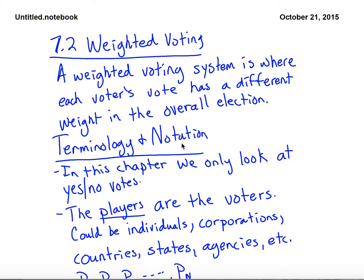Most voting systems use one vote per person, but that doesn't always happen in every voting system. A weighted voting system is a system where each voter has a different weight — you can think of it as controlling a different number of votes than other voters. An example of this is a board of directors for companies, where shareholders have weight based on how many shares they own.